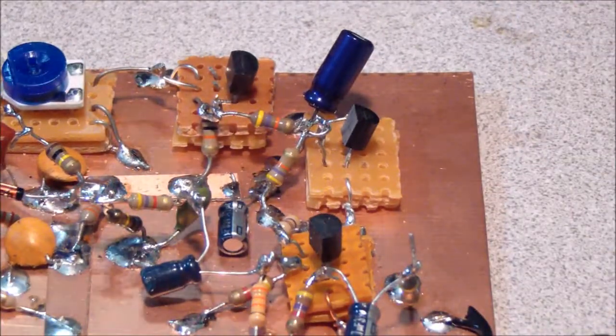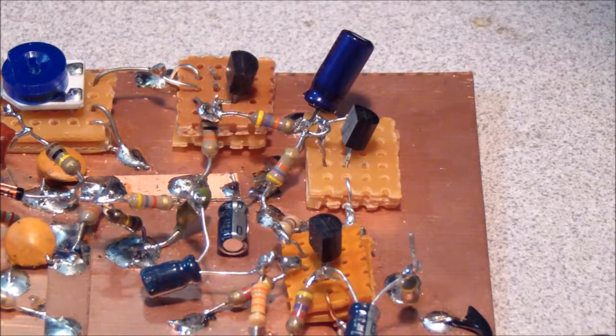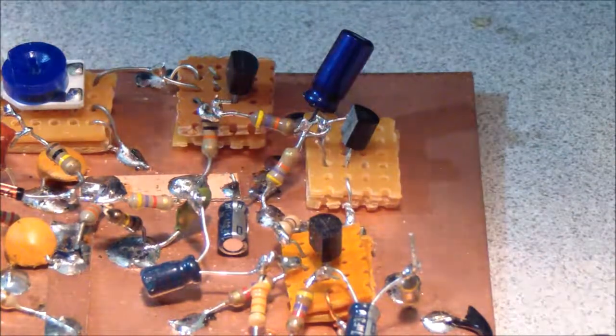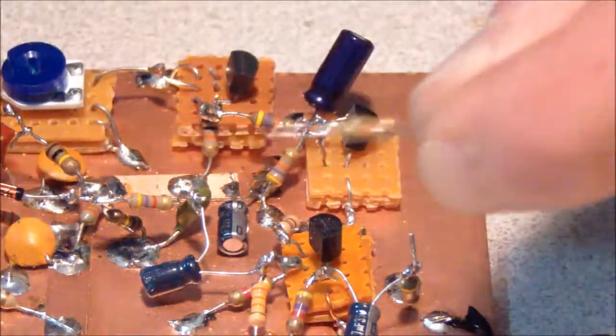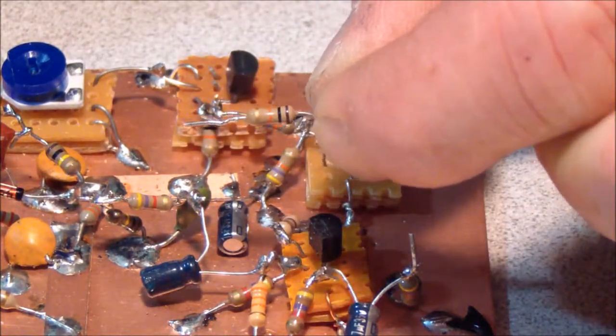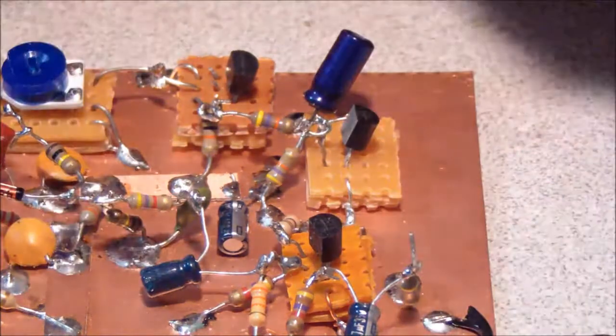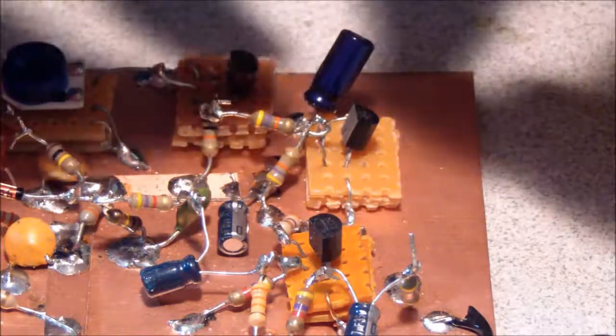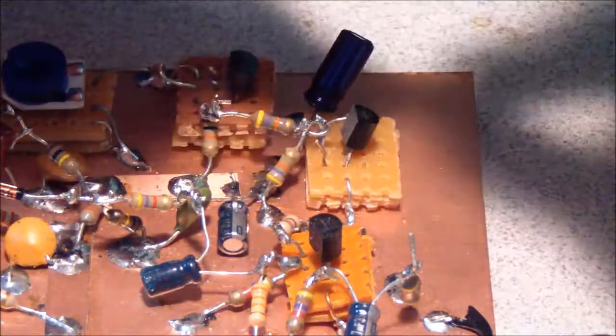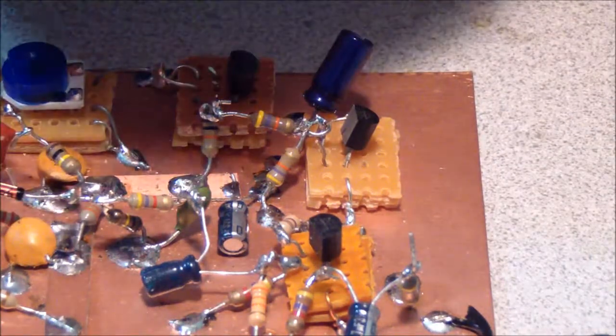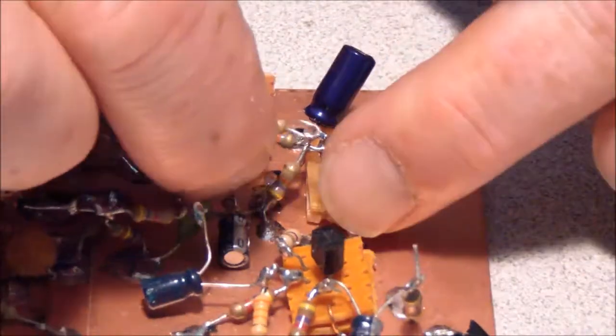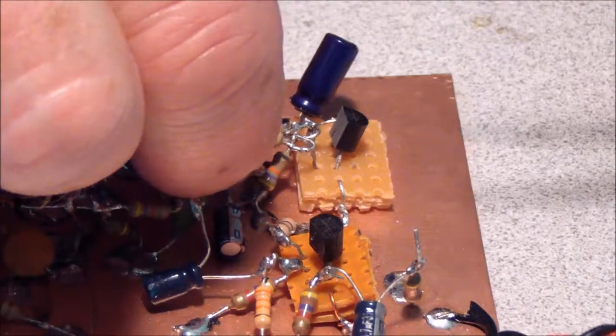And we have one more resistor to install. If I can find it. This is a 10K resistor. Color code is brown, black, orange. And that will go from the collector of the second AGC transistor to the 9V VCC bus.